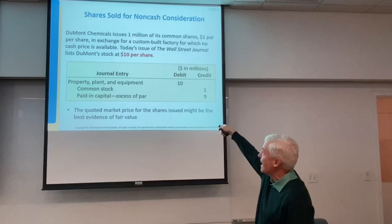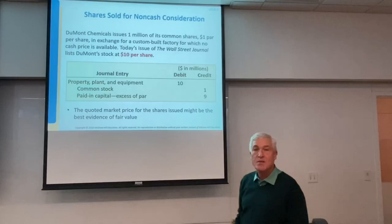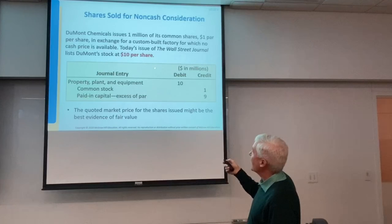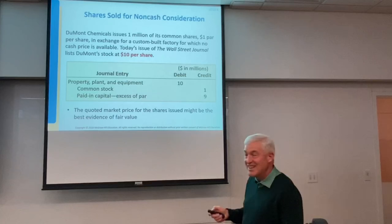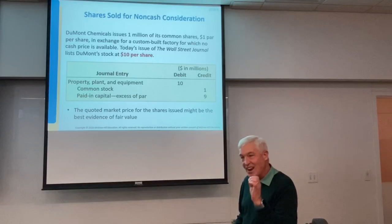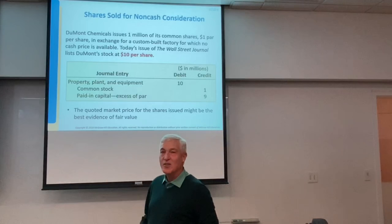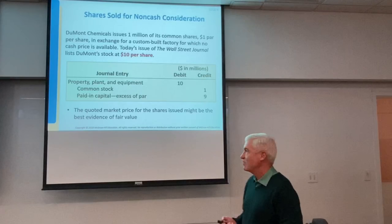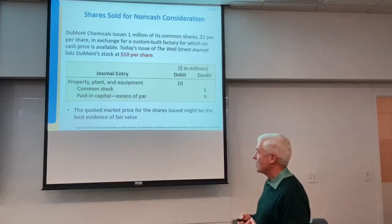Here's a good example: issued 1 million shares, $1 par value, for a custom-built factory worth $10 million. The fair value is $10 million, so we debit the factory for $10 million. On the credit side: 1 million shares times $1 par value equals $1 million in the common stock account — the only thing that ever goes in that account is shares times par value — and the remaining $9 million goes into paid-in capital in excess of par. At any point you can divide the common stock account balance by the par value to find shares issued.